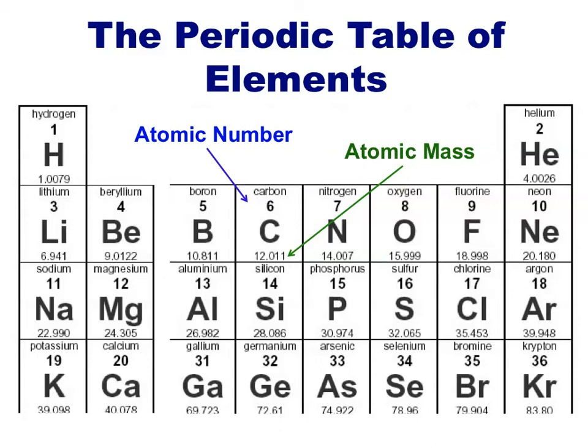Usually, this table will list both the atomic number and the average atomic mass of each element. Notice how the atomic number is always a whole number, since that number actually defines the element. In other words, any atom with six protons is considered a carbon atom by definition.